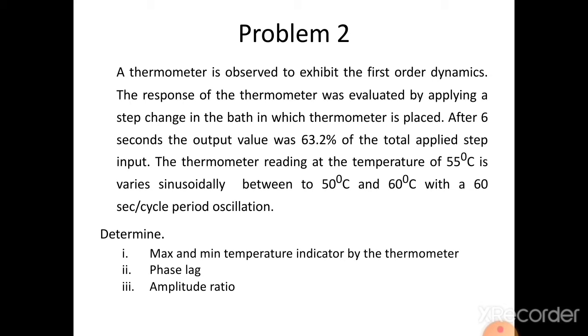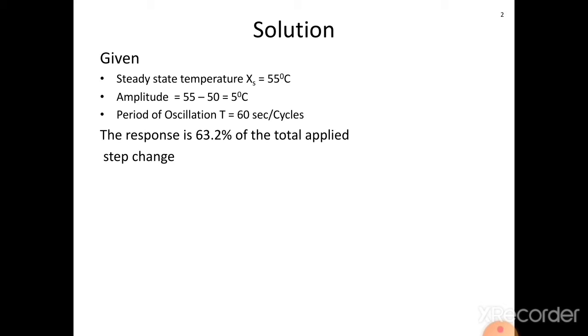The input is sinusoidal and the output is also sinusoidal. A step change is applied from 55 degrees centigrade, and then sinusoidal input is applied. We need to find the minimum temperature, maximum temperature, amplitude ratio, and phase lag. The steady state temperature is 55 degrees centigrade, amplitude equals 55 minus 50 = 5 degrees centigrade, and period of oscillation T equals 60 seconds per cycle. The response is 63.2% of the total applied step change.